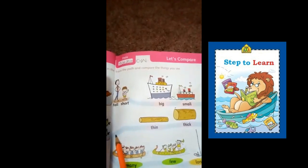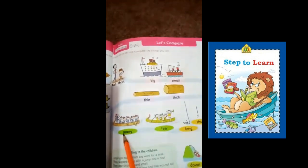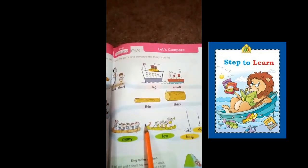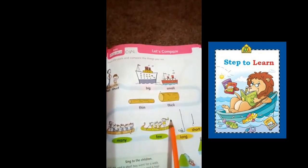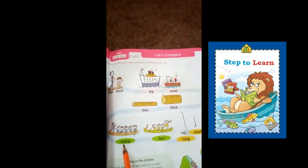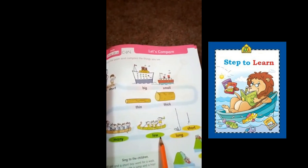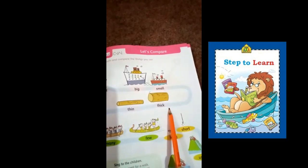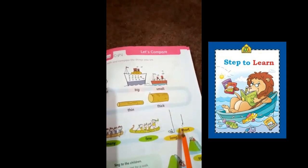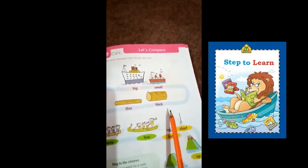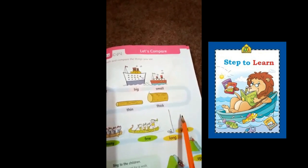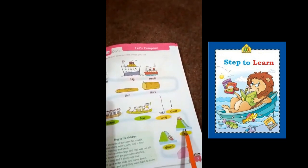Now again going through this path. Many, there are many students, and there are few students. Many, few. Now long rope and a short rope. Long and short. Next, up.